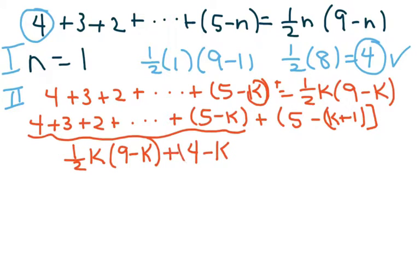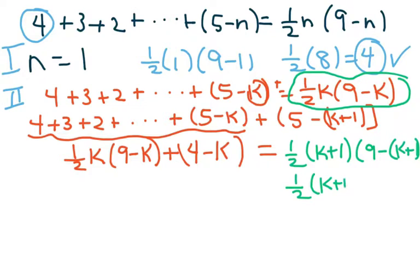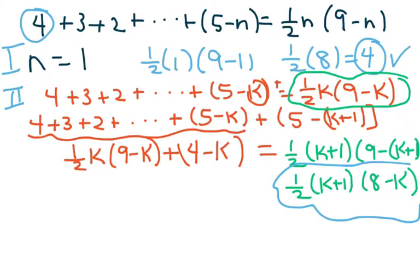This should equal one-half times (k plus one) times (9 minus (k plus one)), which equals one-half times (k plus one) times (8 minus k). That's what we want this side to look like when we're done.